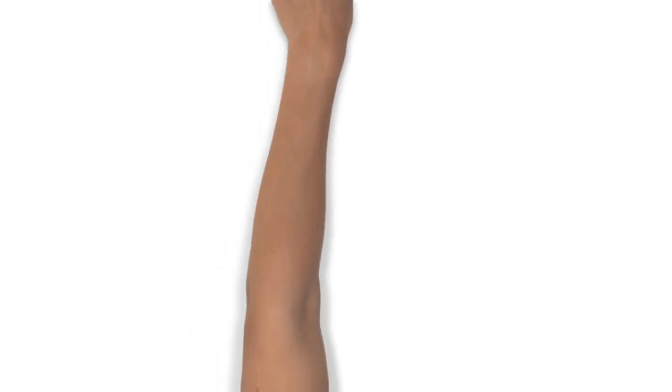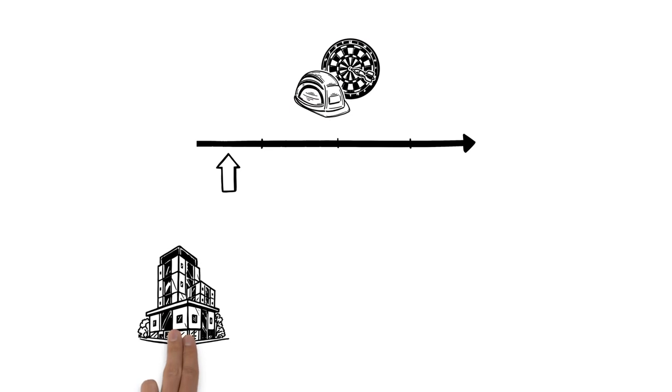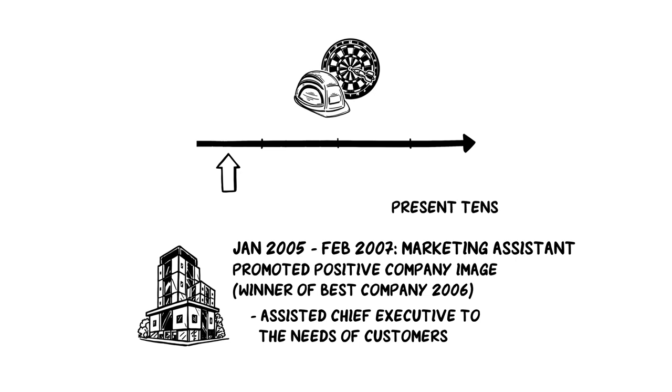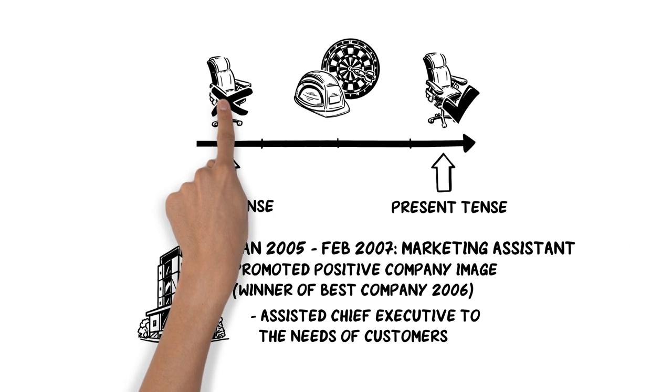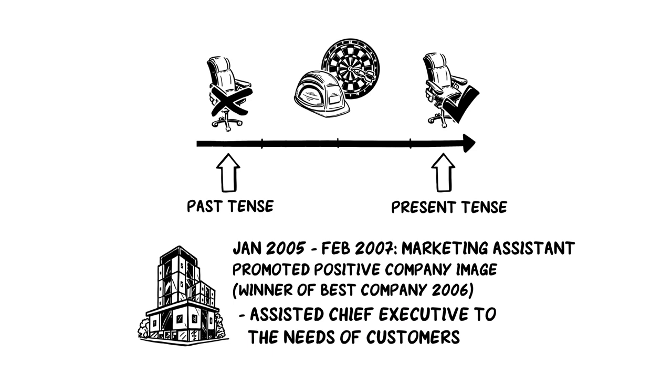For your work experience, start with your most recent and work backwards. Name the employer, your position and use action verbs to describe your key responsibilities. Use present tense for current positions and past tense for work you are no longer doing. Good examples are promoted positive image for the company or assisted chief executive to the needs of customers.